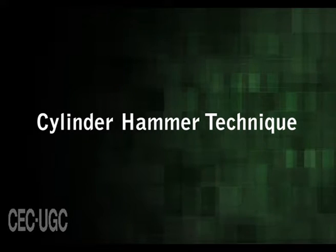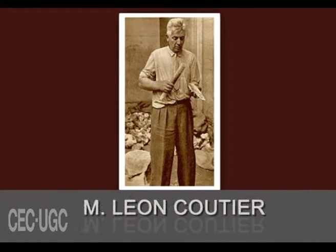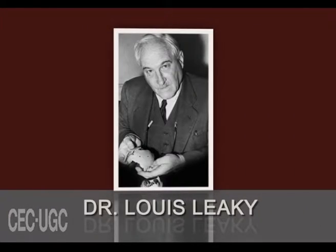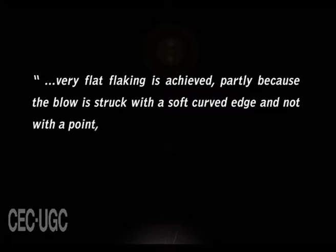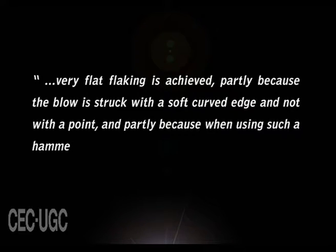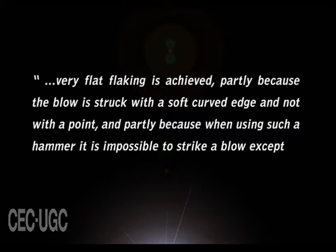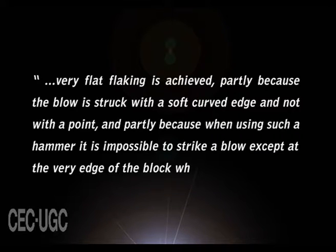The tools of the Acheulean stage of the Lower Palaeolithic culture show a very flat bulb of applied force. Experiments by Coutier and Leakey suggested that a slender hammer of soft stone, bone, or wood was used in detaching such flat flakes. Leakey states: very flat flaking is achieved partly because the blow is struck with a soft curved edge and not with a point, and partly because when using such a hammer it is impossible to strike a blow except at the very edge of the block which is to be trimmed.